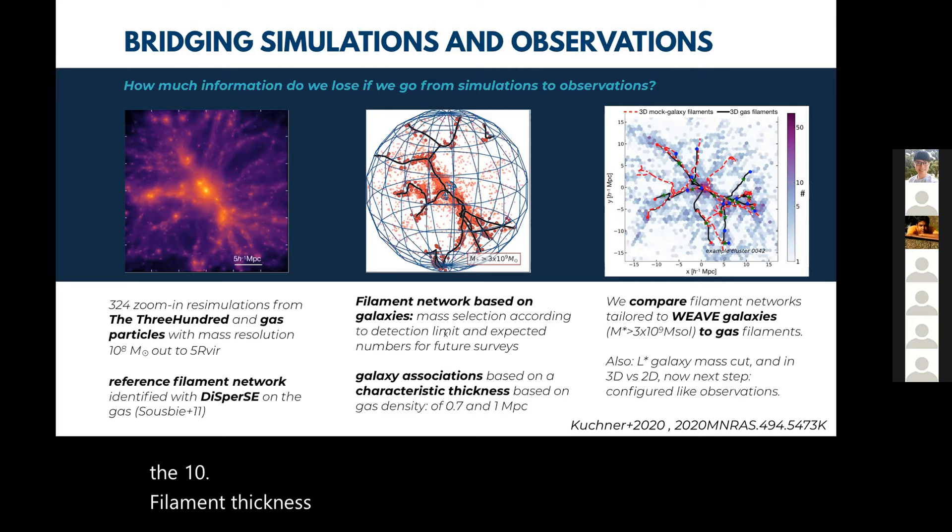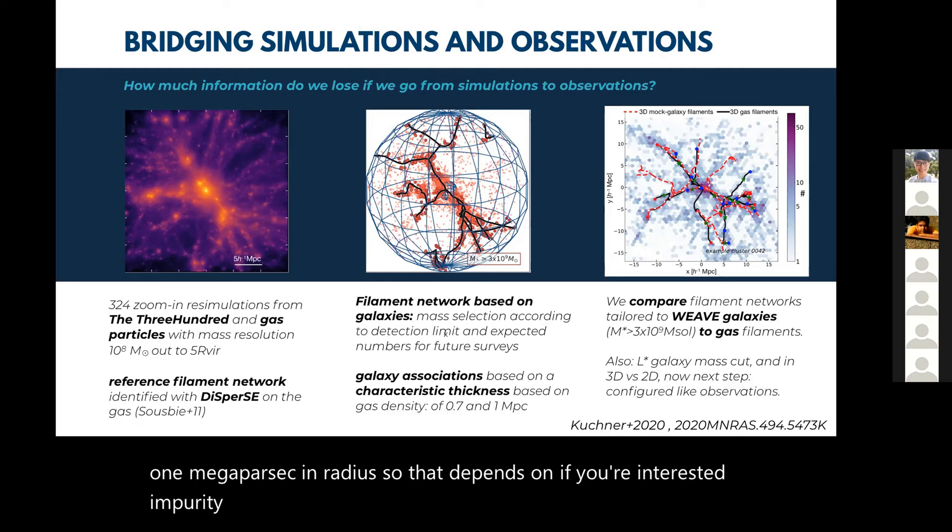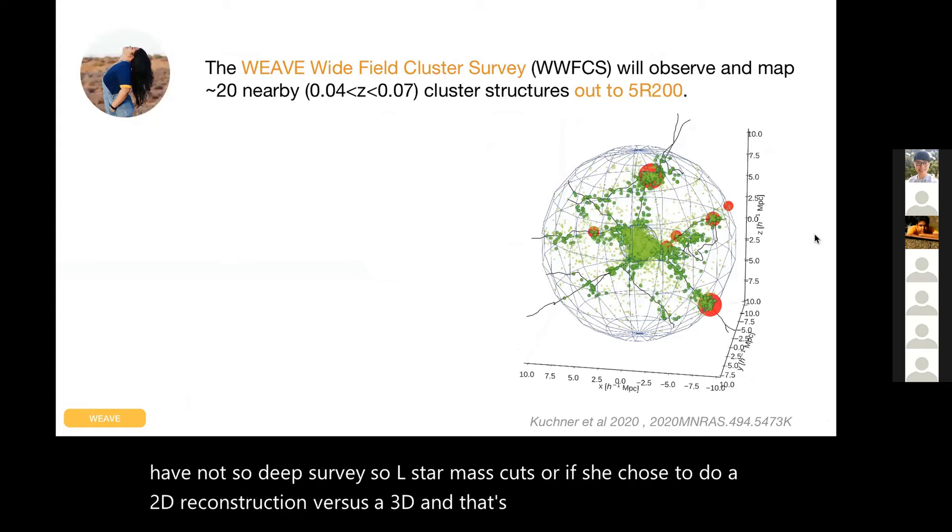We associate galaxies to these filaments. That's seen here in the middle, and these are based on what we expect to get with WEAVE, down to 10^9 solar masses or in halo mass about 10^10. A filament's thickness depends on your science case. We detail this in this publication. We find a thickness of about 0.7 or 1 megaparsec in radius, depending on if you're interested in purity or completeness, accuracy or precision. But these are the numbers that we will go with. Basically we then compare filament networks from our reference underlying gas to degraded with what we think it will be like in WEAVE and just compare the two and see how well we're doing. We also do this if you have not so deep surveys or L-star mass cuts or if you choose to do a 2D reconstruction versus a 3D. And that's all in that paper.